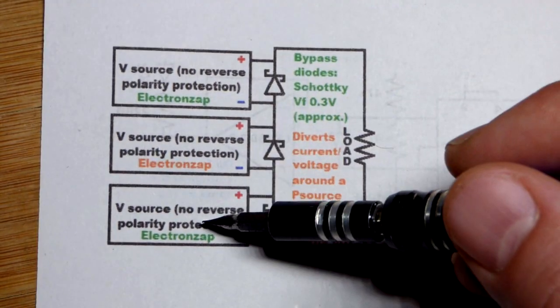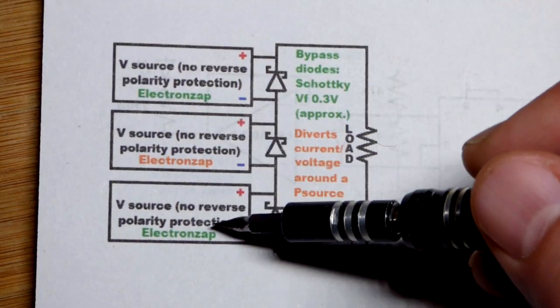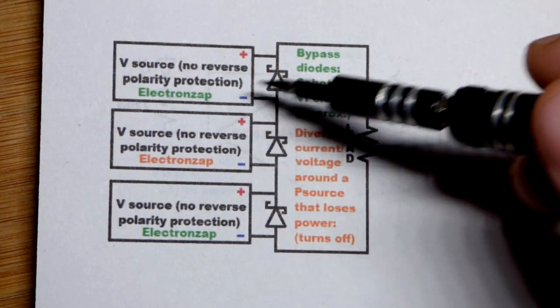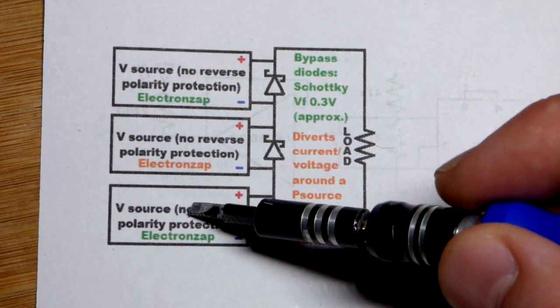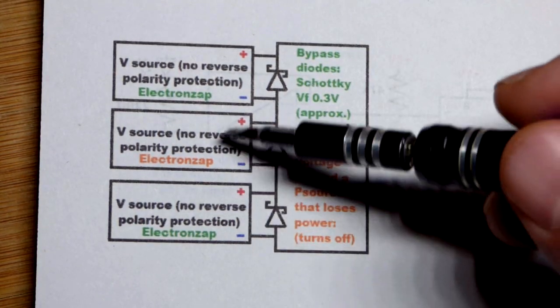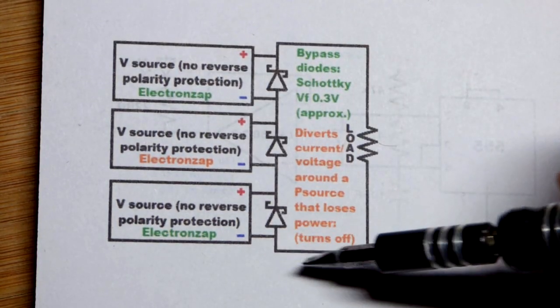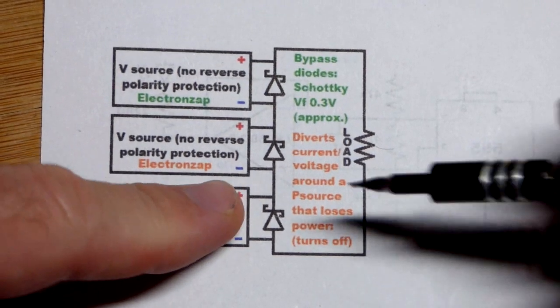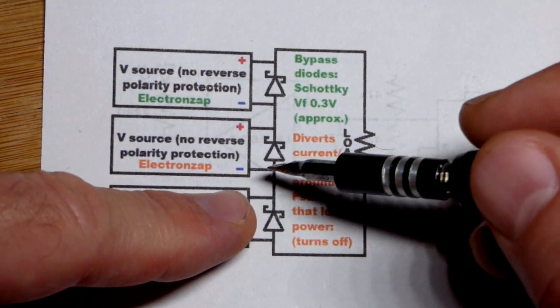So ultimately it can kill all of the power you're going to get from this. Because the current can only flow as much as the weakest string of cells. Right there. The one current path. If you make it so current can't flow through one point. Remember we're pretending like the diode is not there. Current won't flow through any of it. It can stop completely. So that's where the bypass diode comes in.